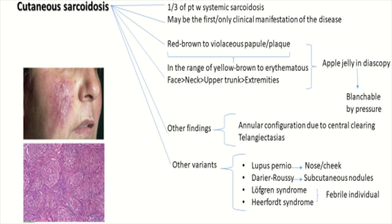Cutaneous sarcoidosis involves one third of patients with systemic sarcoidosis. It may be the only and first clinical manifestation of the disease, mainly presenting as red to brown to violaceous papules and plaques, primarily affecting the face, though the neck, upper trunk, and extremities can also be involved. On diascopy, these lesions show apple jelly appearance. Other features include annular configuration due to central clearing and telangiectasias. Variants include lupus pernio, Darier-Roussy, Löfgren syndrome, and Heerfordt syndrome.